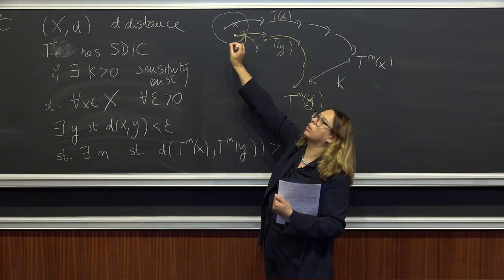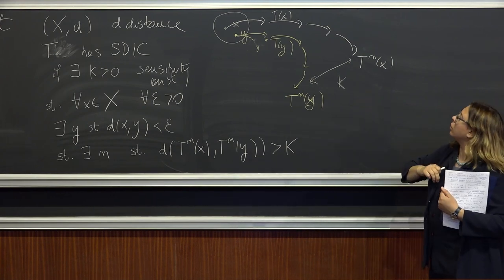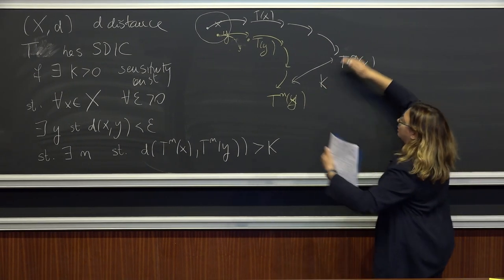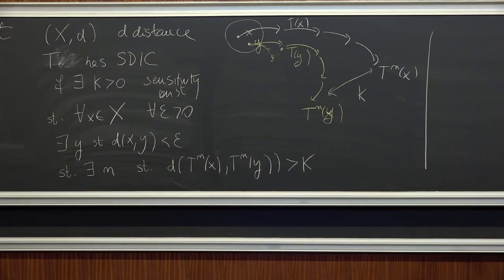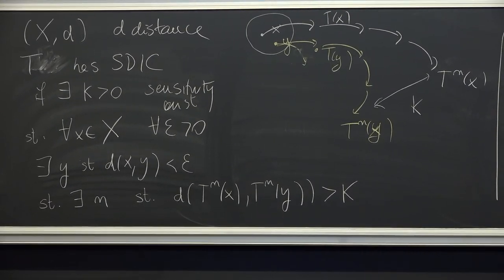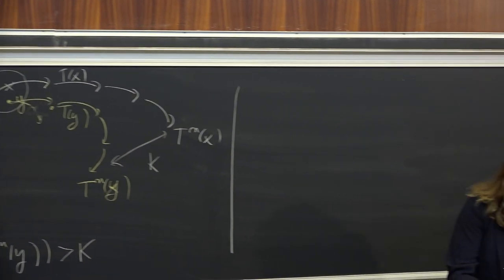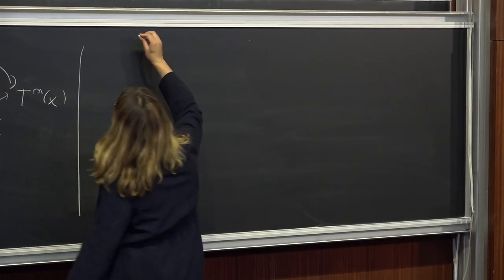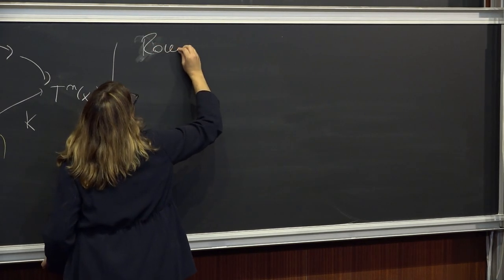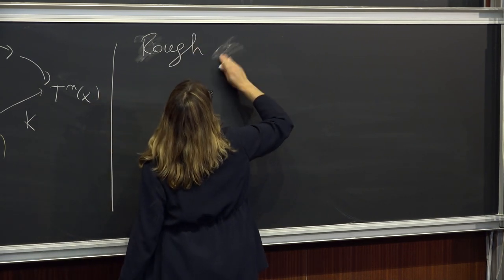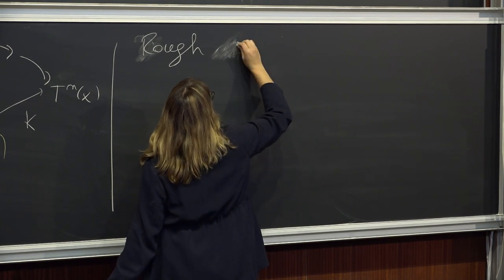This idea of sensitive dependence is key in the deterministic chaos point of view. Not every system has it, but we will see plenty of examples. Dynamical systems have a very rough division — a very rough differentiation. There are three main types of dynamical systems.